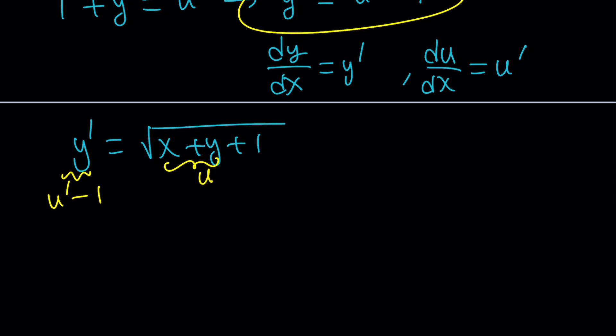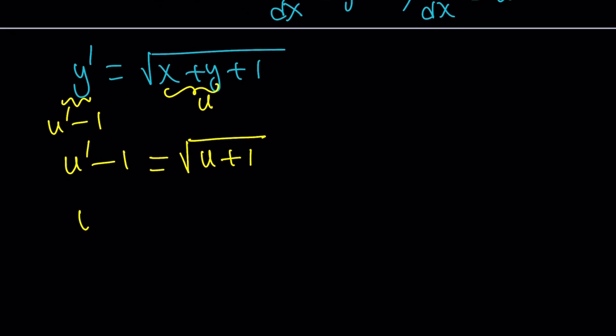And when you do that, you're going to get the following. u prime minus 1 equals the square root of u plus 1. So, we're going to get a radical, which is fine. Don't worry. We'll fix it. And then, at this point, you may want to just add 1 to both sides and isolate u prime. And that's going to be the square root of u plus 1 plus 1 on the outside. Great.